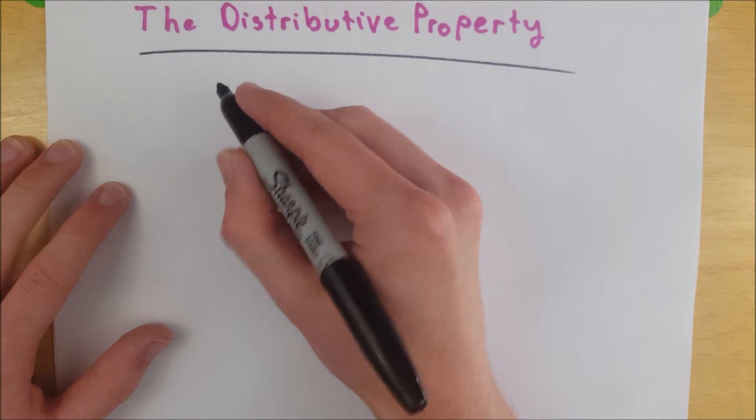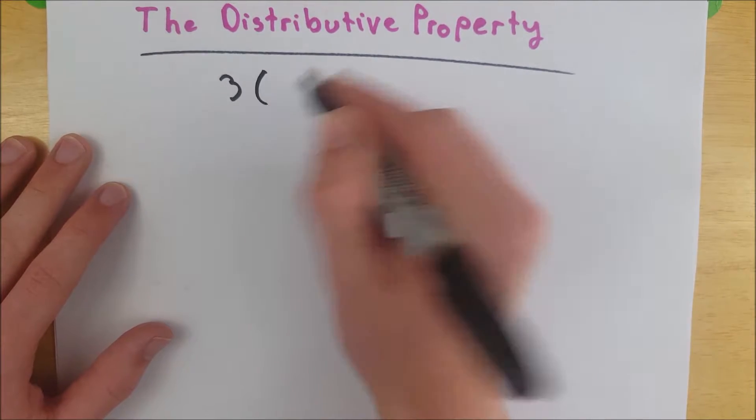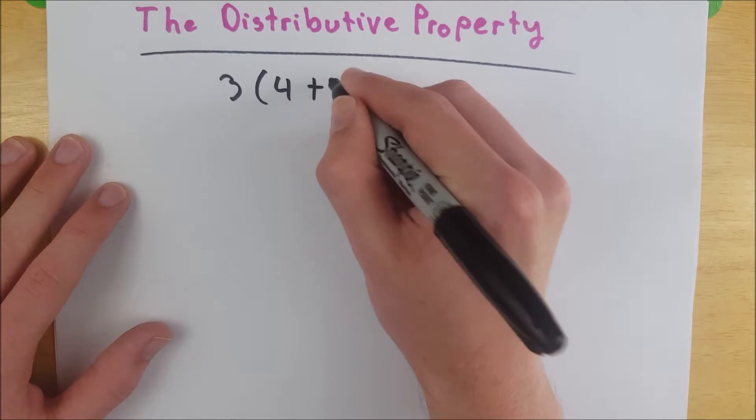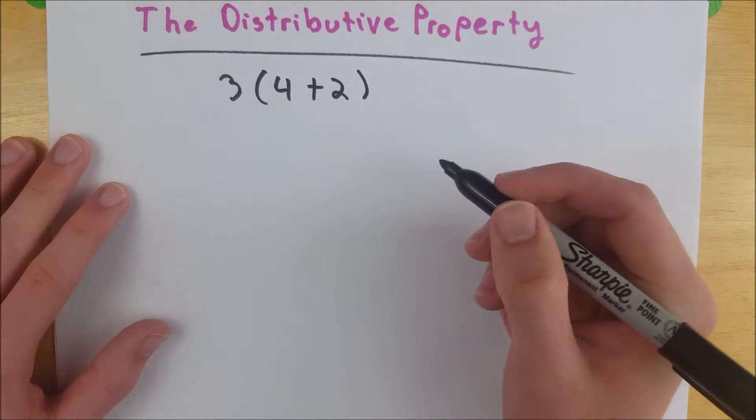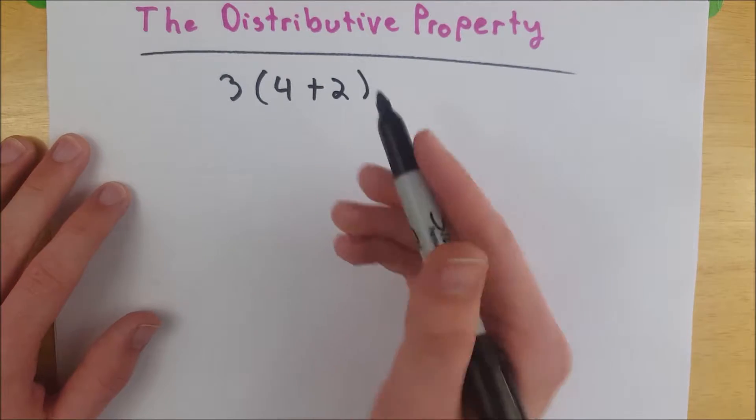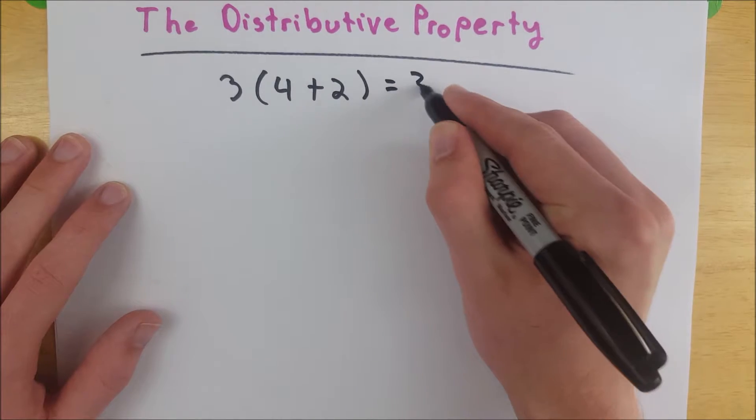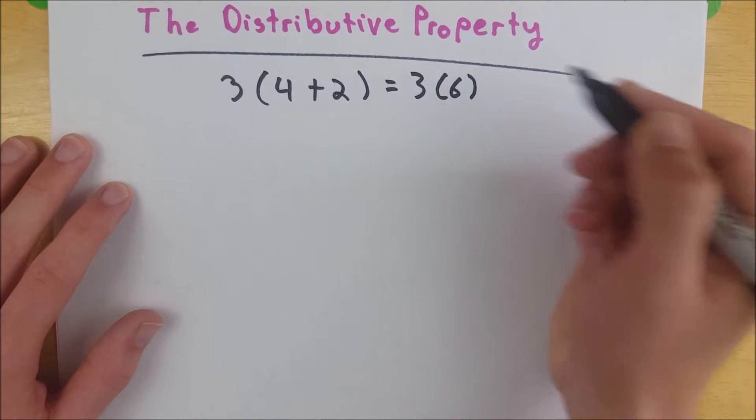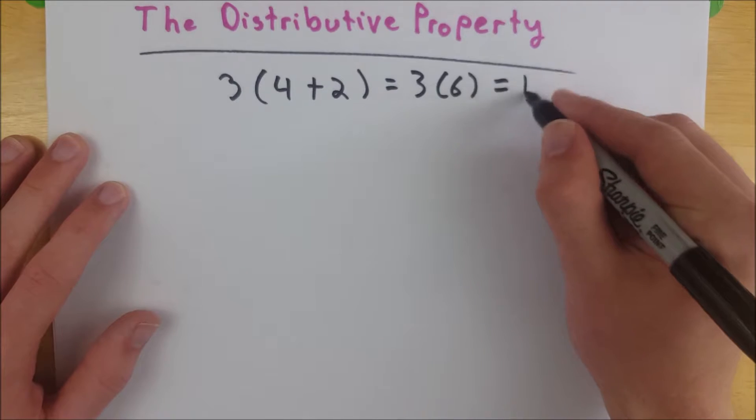So let's say we have something like 3 times 4 plus 2. Following our order of operations we know we need to do what's inside the parentheses first. So we could rewrite this as 3 multiplied by 6, adding the 4 and the 2, and then that would give us 18.